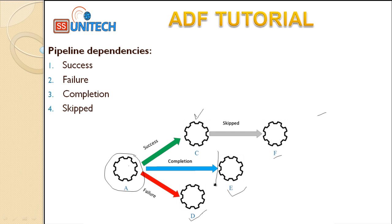In the second case, if task A fails, then task D will be executed and task F will be executed. And if task A is executed with success, then only task C will be executed. So let us understand this in real-time.